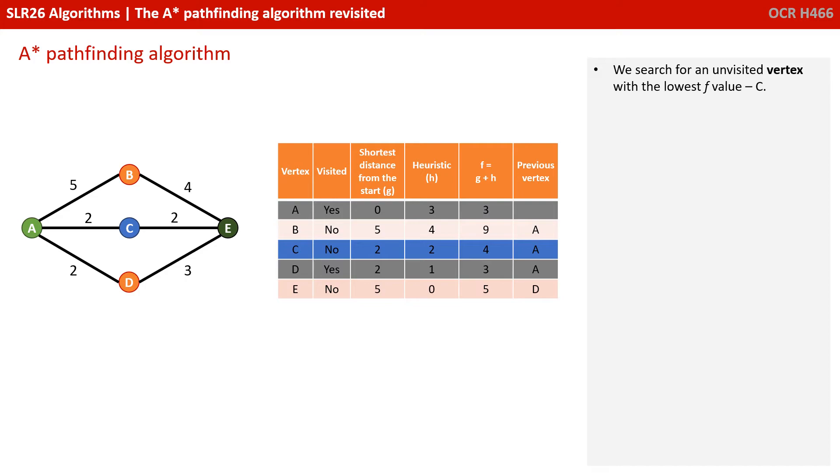We simply search for an unvisited vertex with the lowest F value, well that's currently C with an F value of 4. We consider each connected vertex that has not been visited, and that's E.